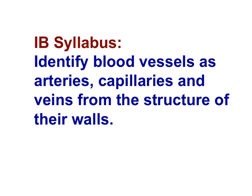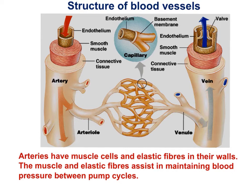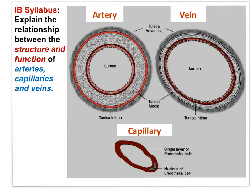Pay close attention to what you see in these images, because you need to be able to identify blood vessels as arteries, capillaries, and veins from the structure of their walls. In this image, the thick-walled artery is very clear. Notice that capillaries are composed of a single cell layer known as endothelium. The lumen of veins is more open than that of arteries. Veins have valves to assist with the movement of blood in a single direction — to prevent backflow of blood. In this image, you can see the thick-walled artery, the more open lumen of the vein, and the capillary composed of a single cell layer.